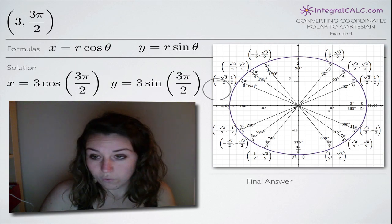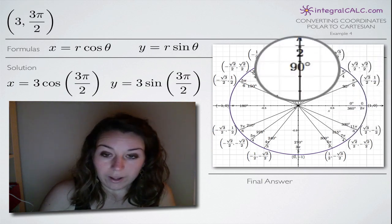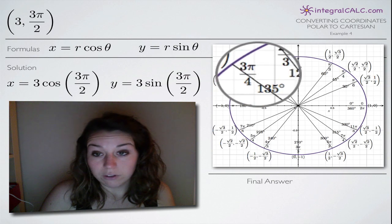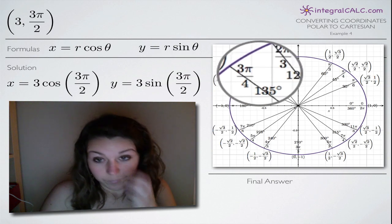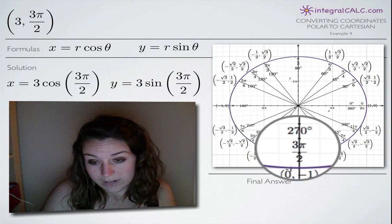So what we do is we go over here to our unit circle and we start at 0 and we work our way counterclockwise in the positive direction until we find the angle 3π/2 which is right down here.